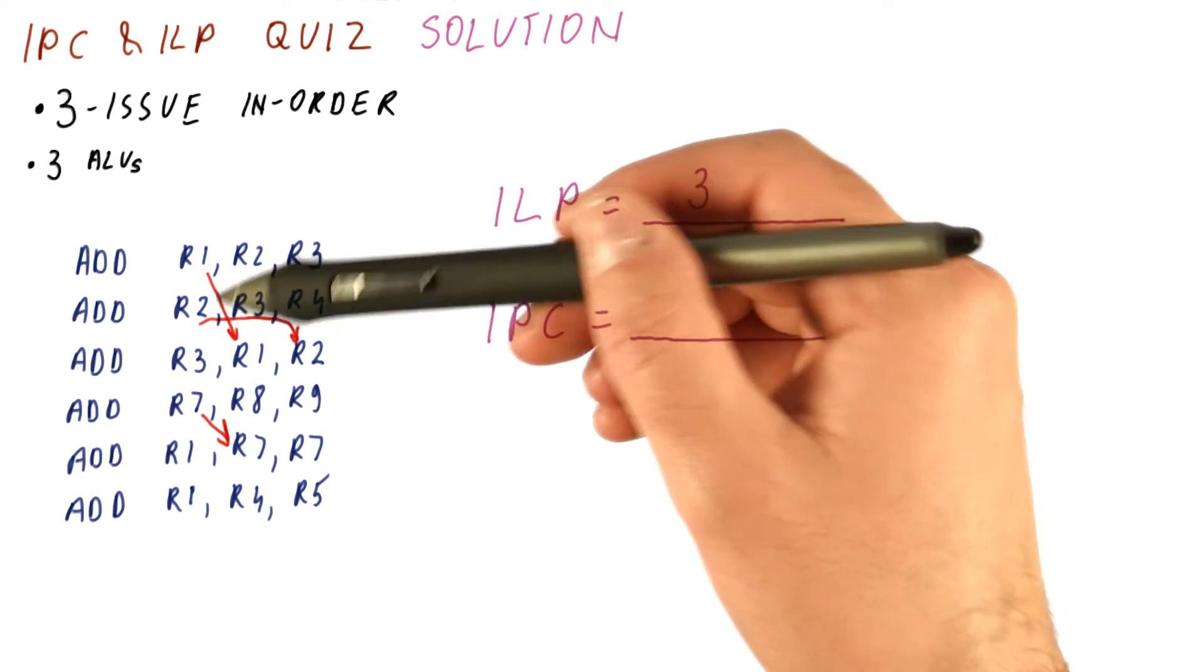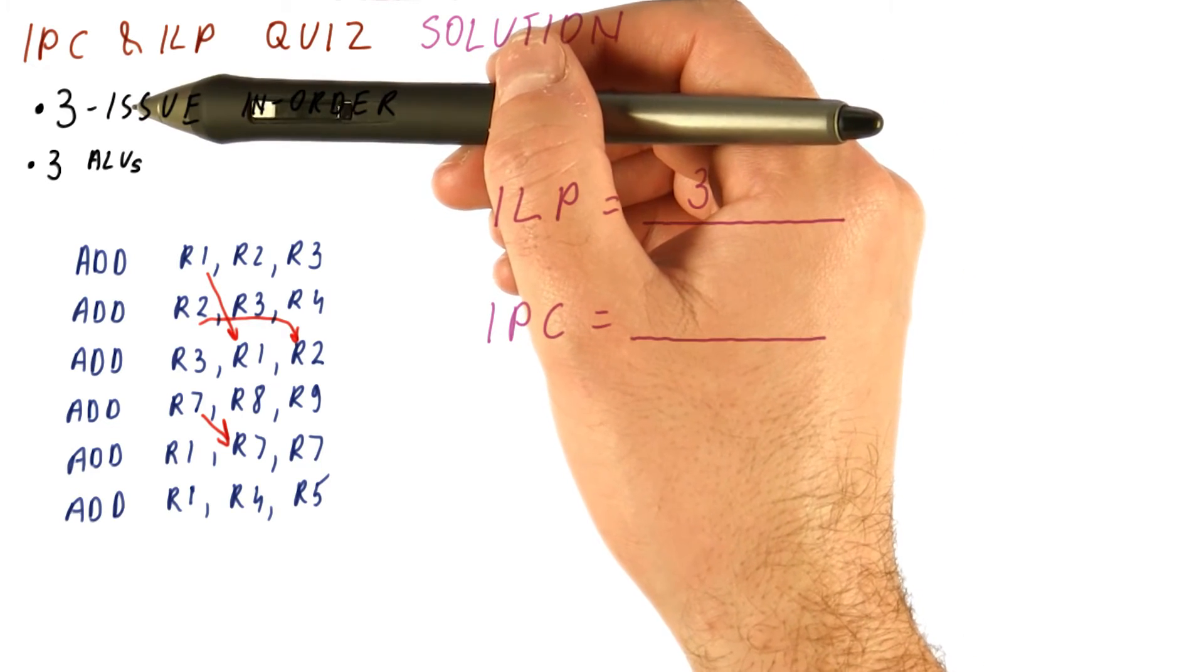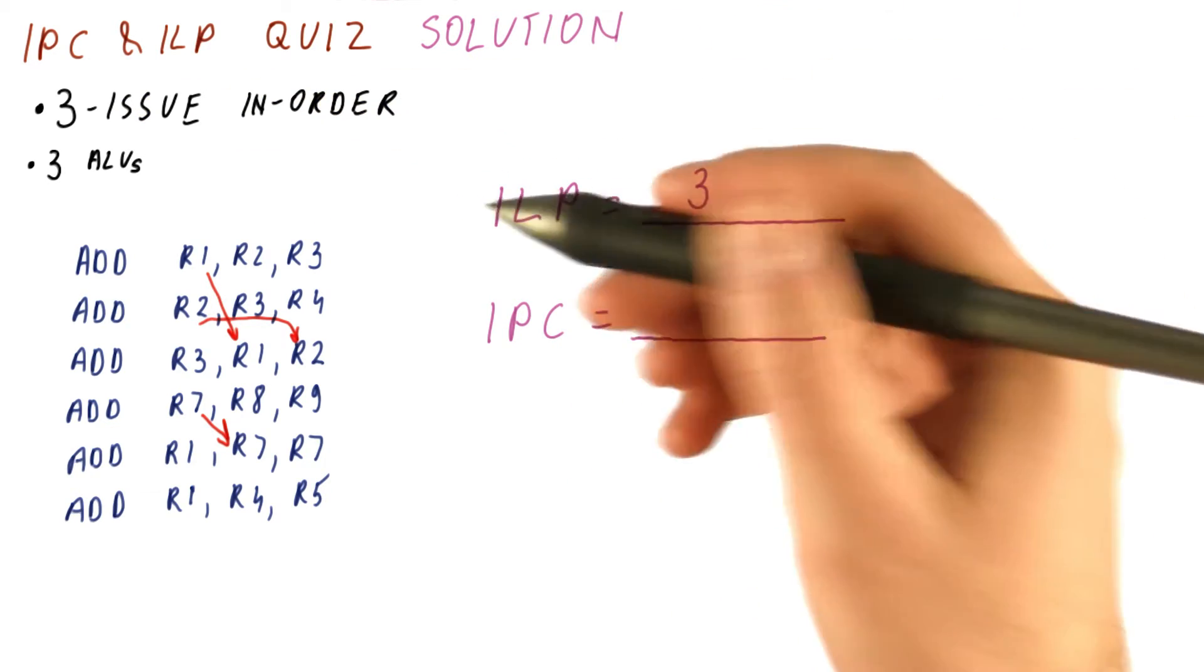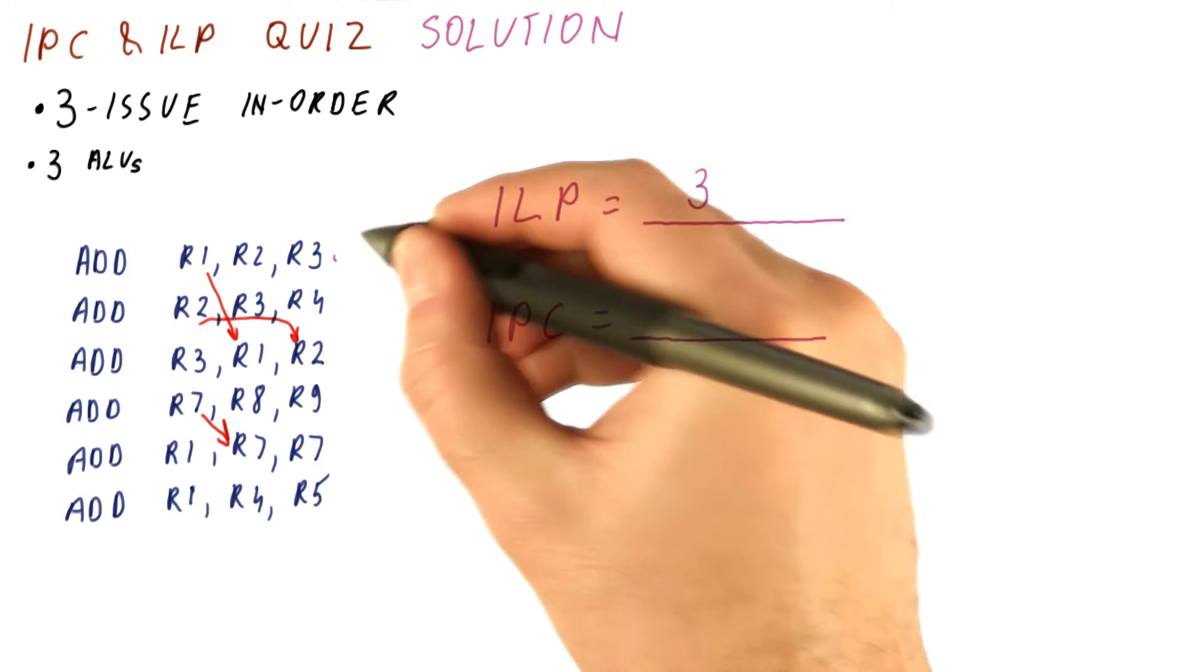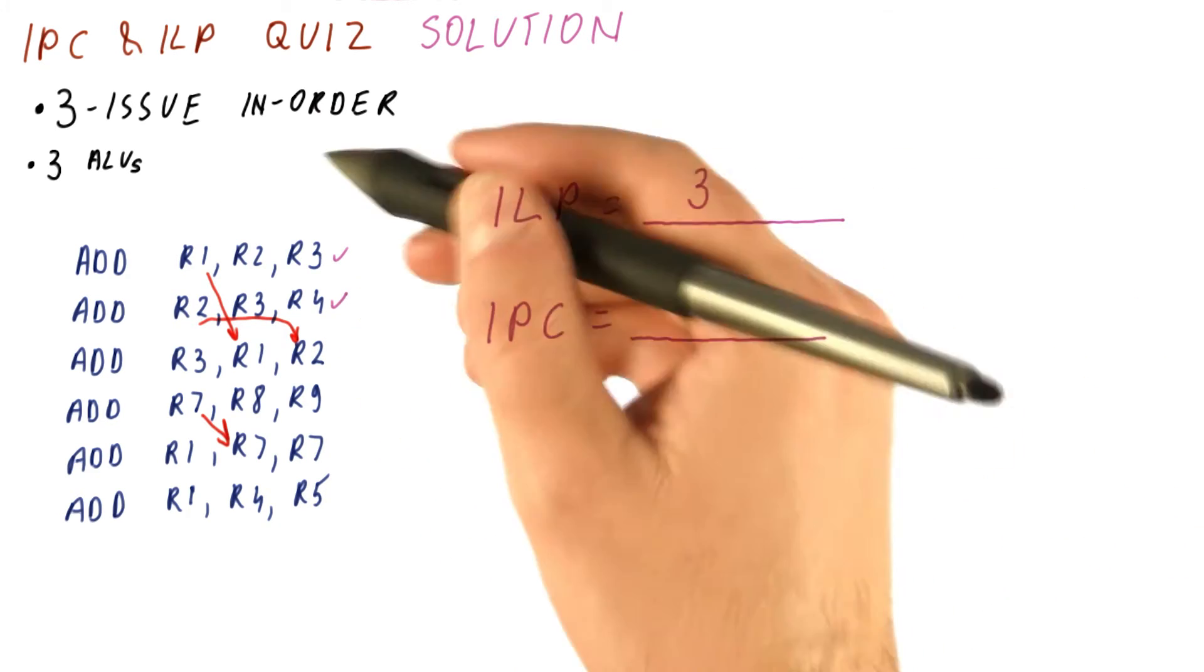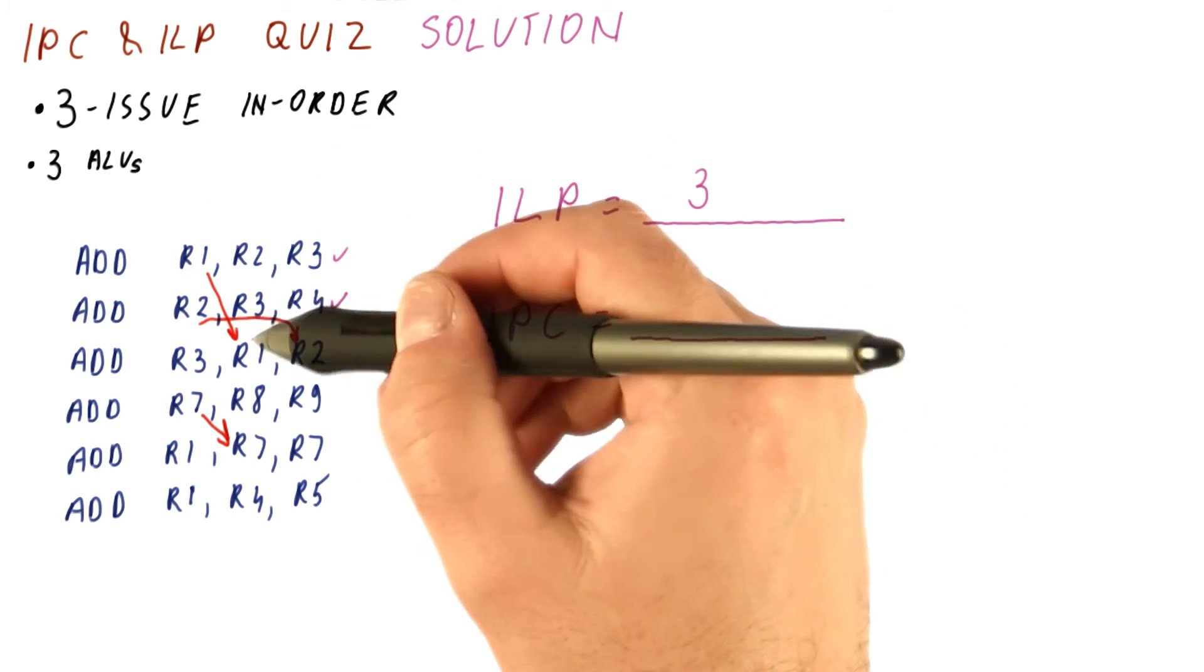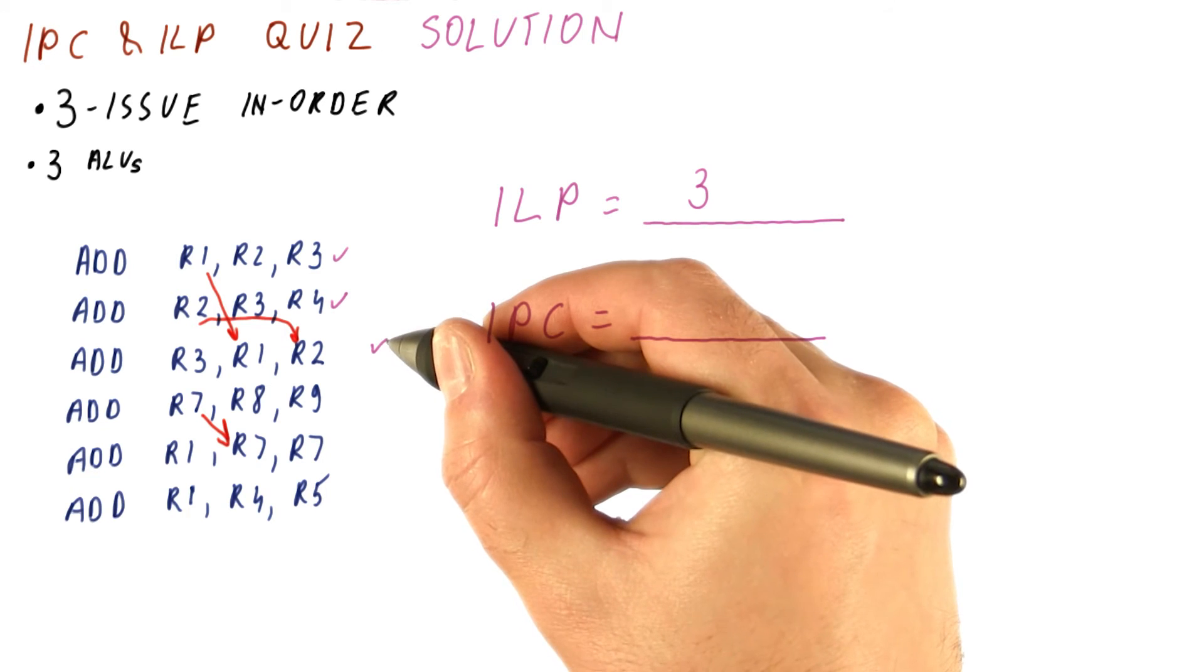For the IPC, we have to worry not only about these dependencies, but also that this is a three issue processor and that it's in order. So this can still be done in the first cycle. This can be done in the first cycle. As far as three issue is concerned, this could be done in the first cycle, but because it has a dependence, we still have to delay it by one cycle.